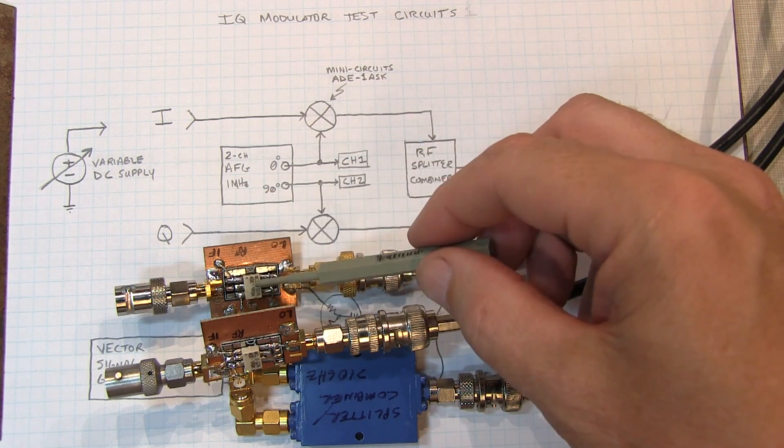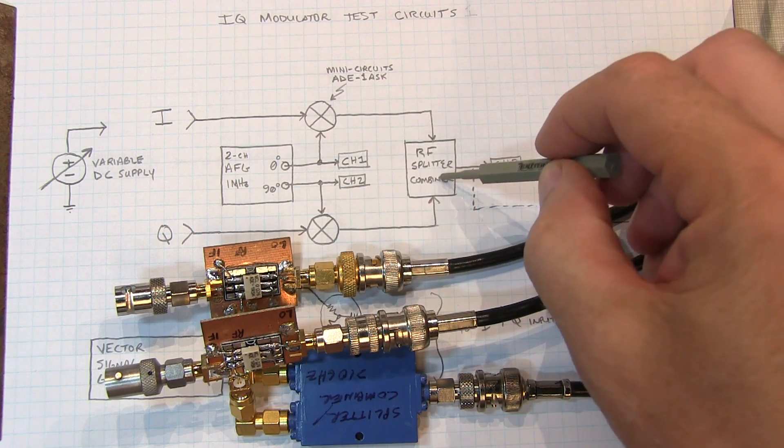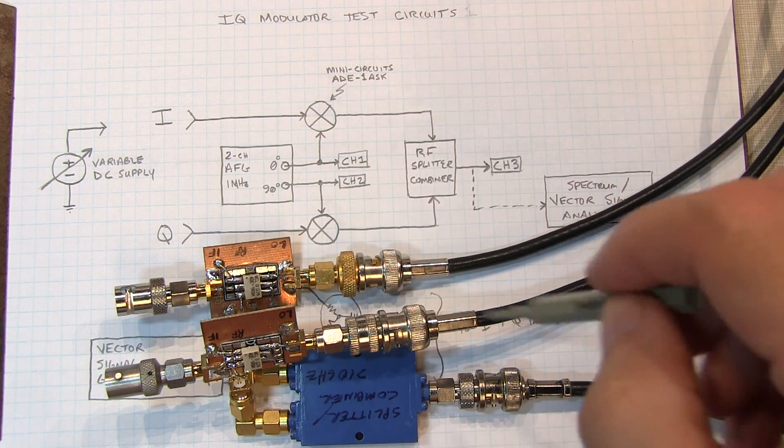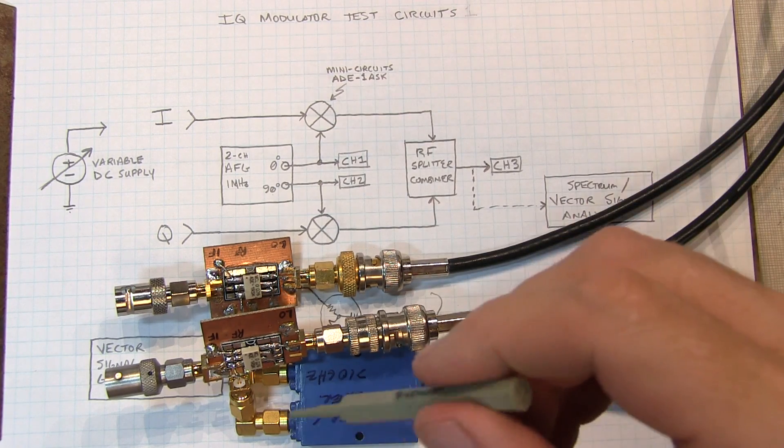This will allow me to kind of take a look then at what happens if those signals are not in quadrature later on. The output of each of these mixers then goes into an RF splitter combiner right here, and then the output from that we're going to take to the oscilloscope and the spectrum analyzer to go take a look at things.